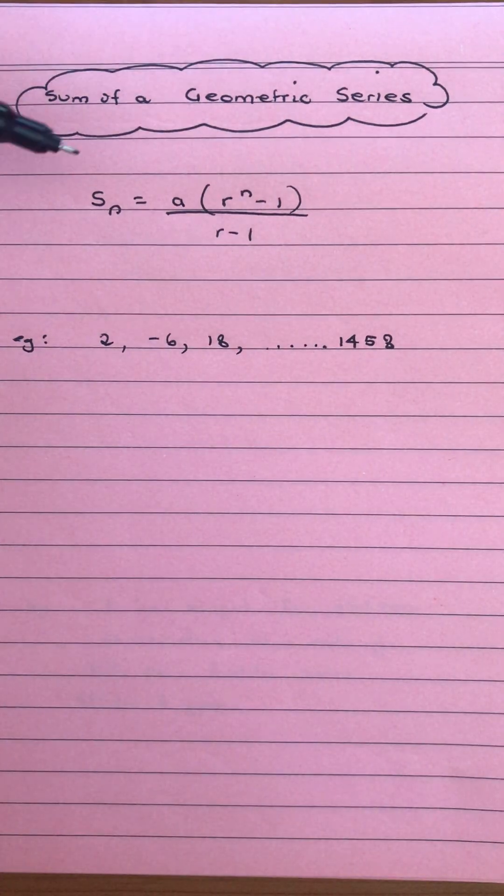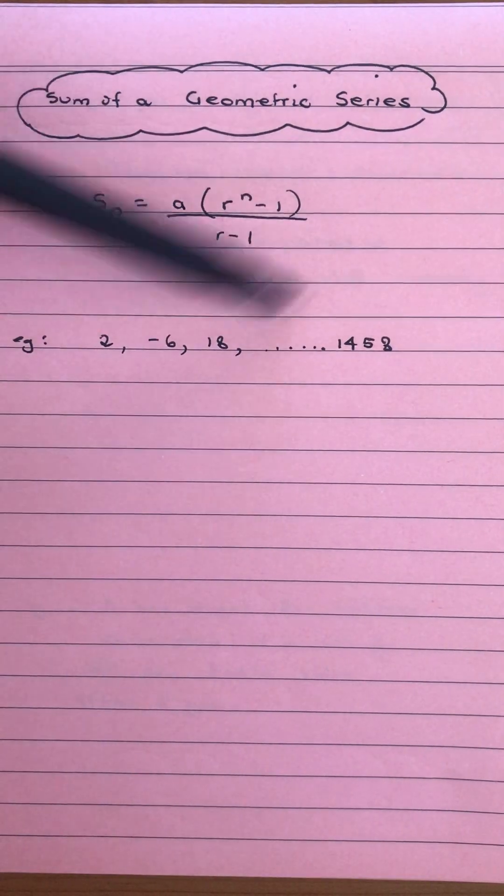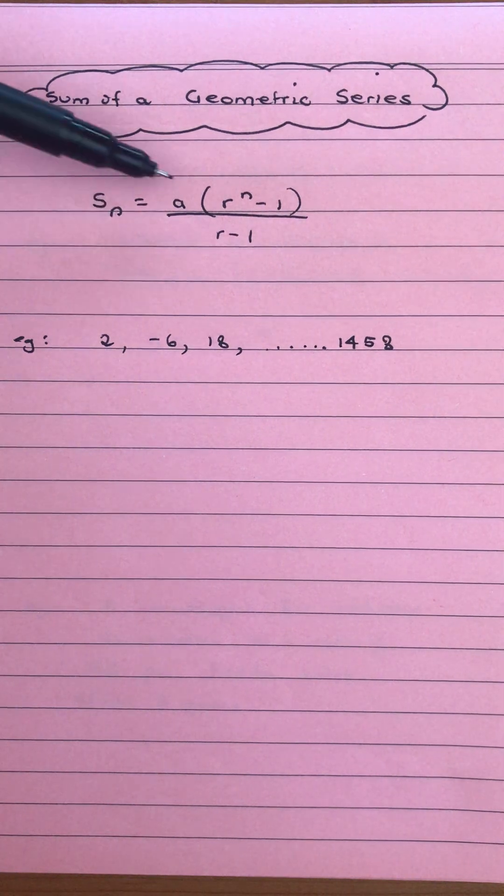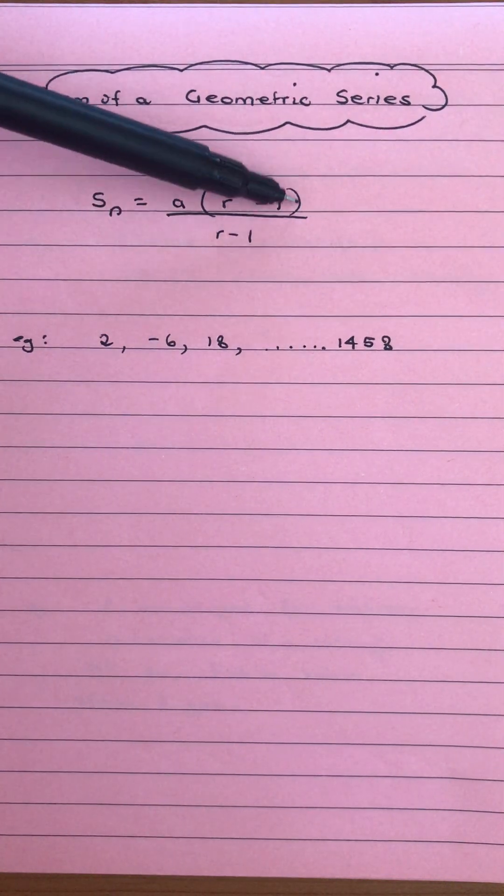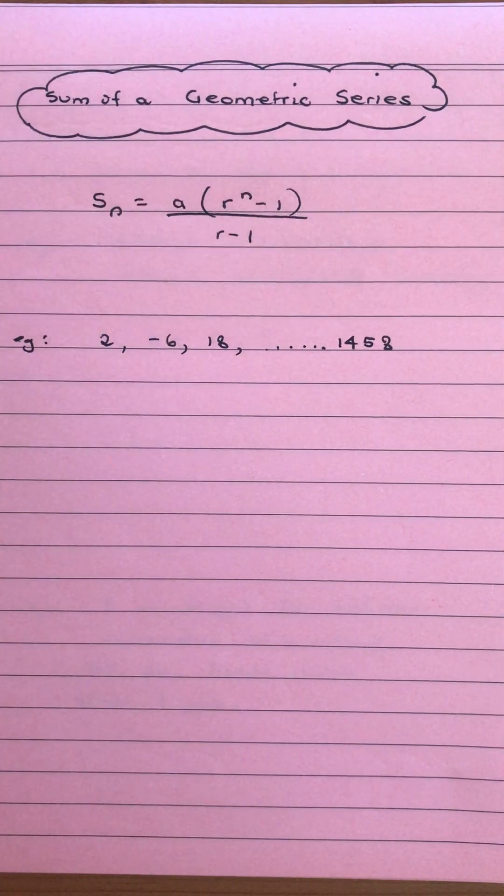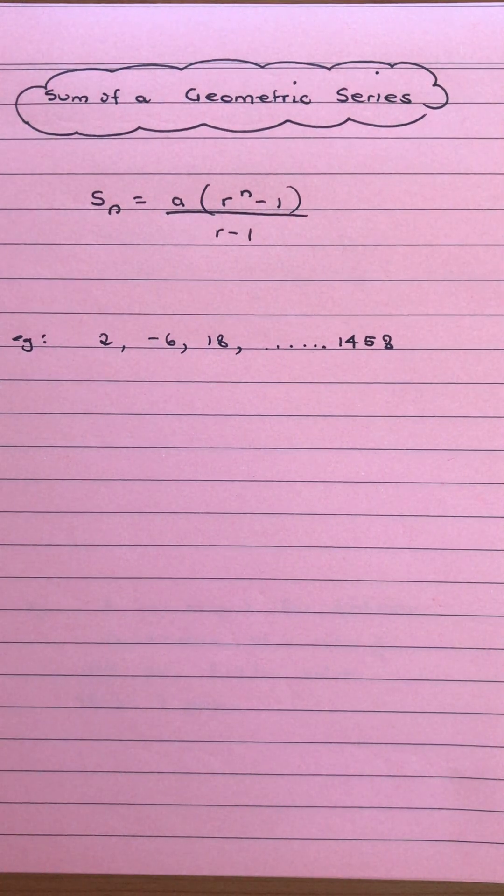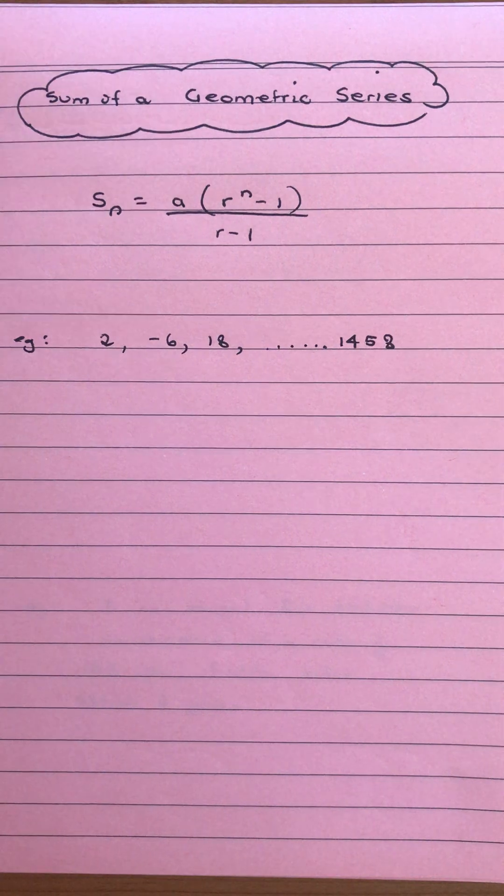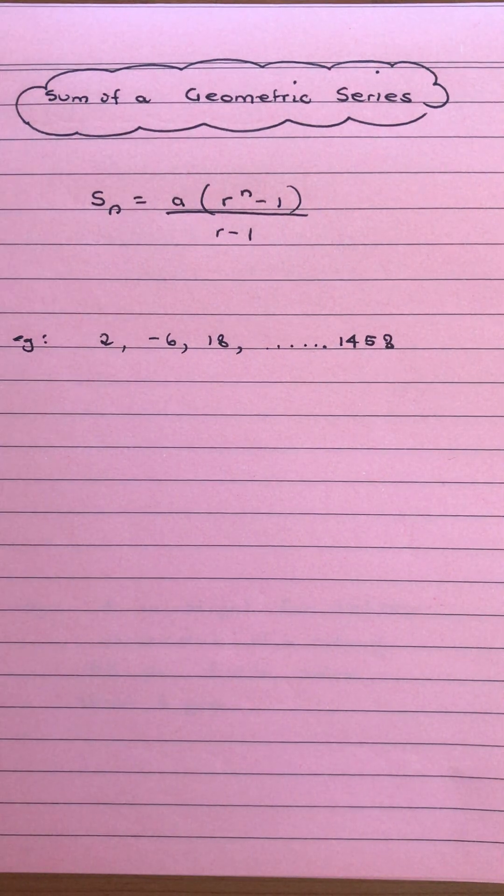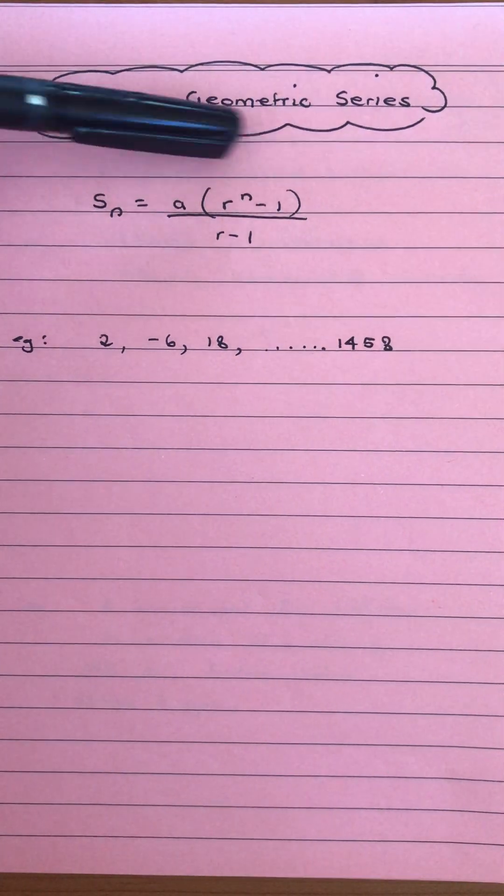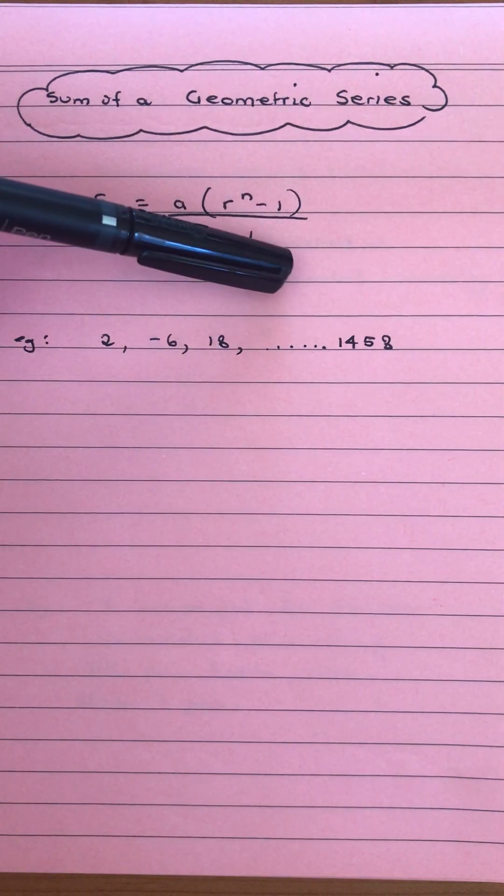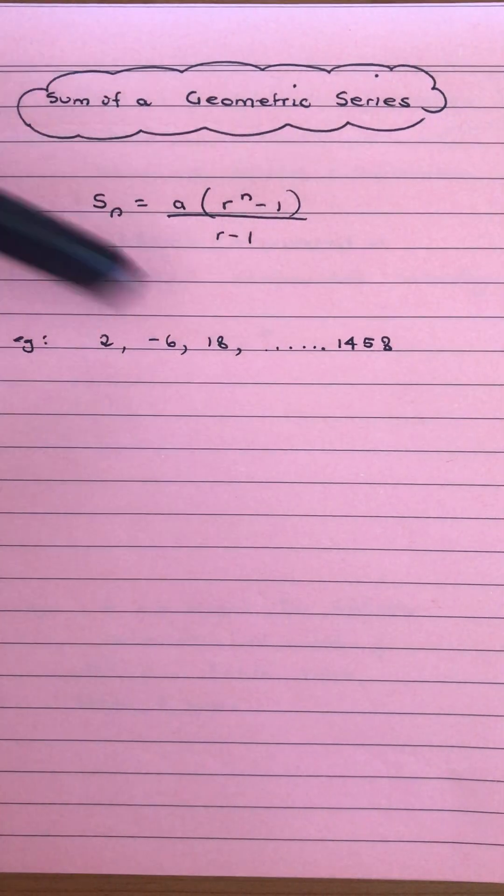Looking at sum of a geometric series, here's our rule: the sum of a series S_n is a(r^n - 1)/(r - 1). If your r is a negative number between -1 and 1, it can be easier to use the reverse form where you've got 1 - r^n and 1 - r on the bottom, but you can use this one for both times.